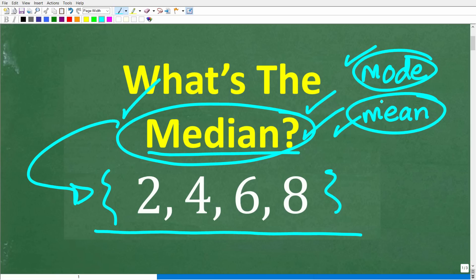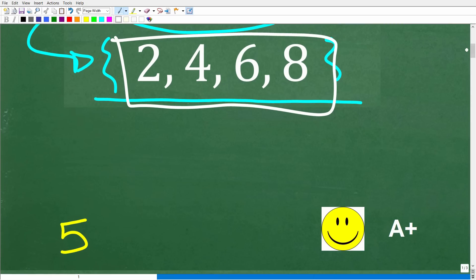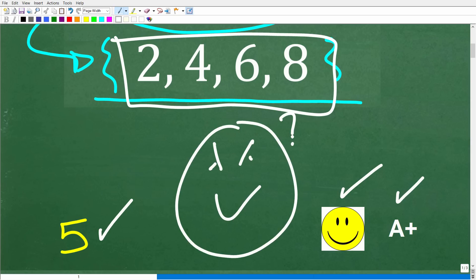Let's go ahead and take a look at the correct answer. Again, we want to find the median of this data set right here. So the correct solution is 5. Now, if you got this right, you definitely get a happy face and an A+. And if you're like, Mr. YouTube Math Man, I know this is easy, but I totally forgot this stuff. Well, don't worry. This is not that difficult. Matter of fact, let's go ahead and get started right now.